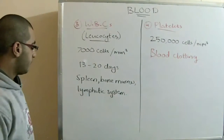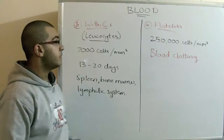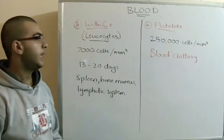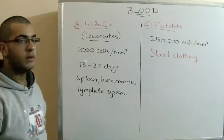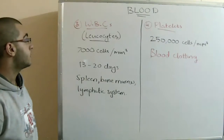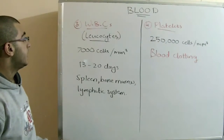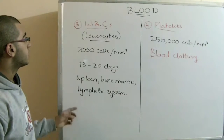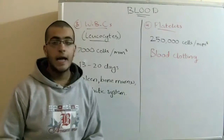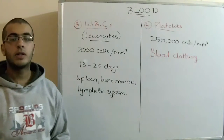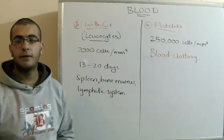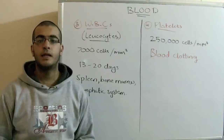So by now we know the four main components of the blood. We know the plasma and its characteristics, the red blood cells, white blood cells, and platelets. And next time we will talk about the functions of the blood itself.